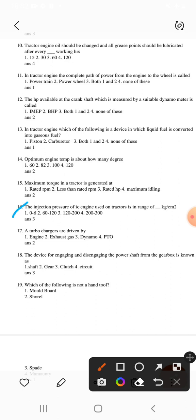Question 15: Maximum torque in tractor generated at less than rated RPM - this is a very famous question, so keep in mind. Question 16: Injection pressure of IC engine used on tractor in the range of 120 to 200 kg per centimeter square. Third option will be correct. Question 17: Turbochargers are driven by exhaust gas. Second is correct.